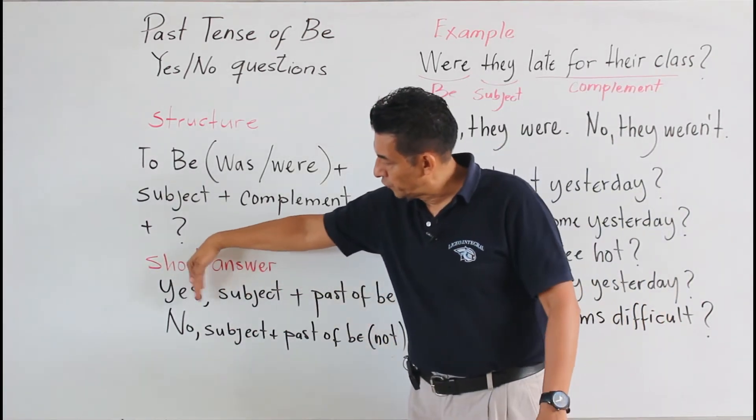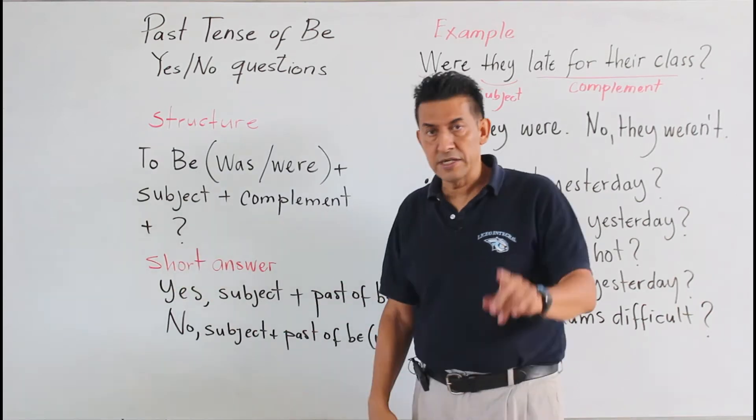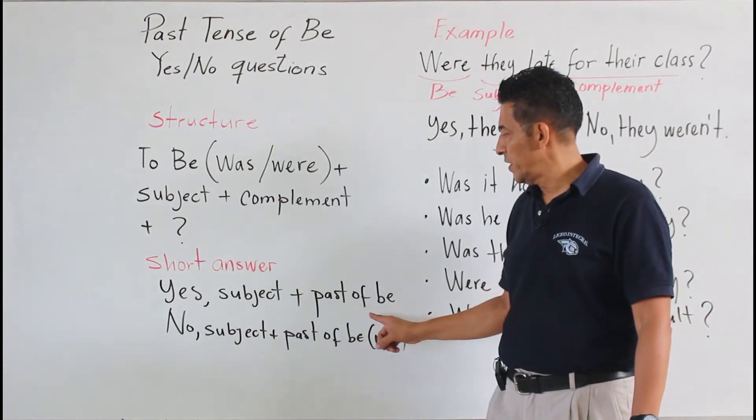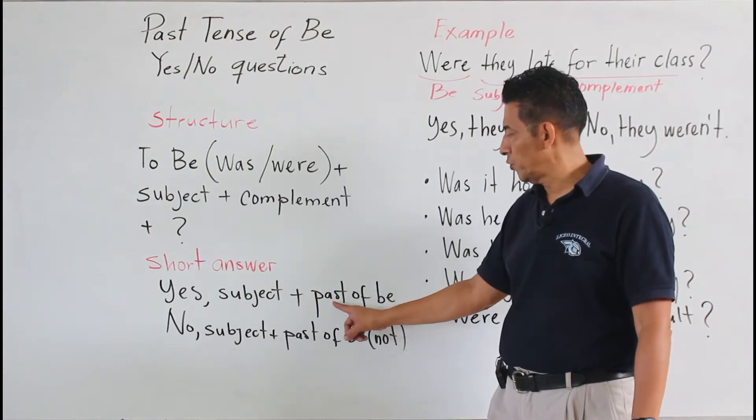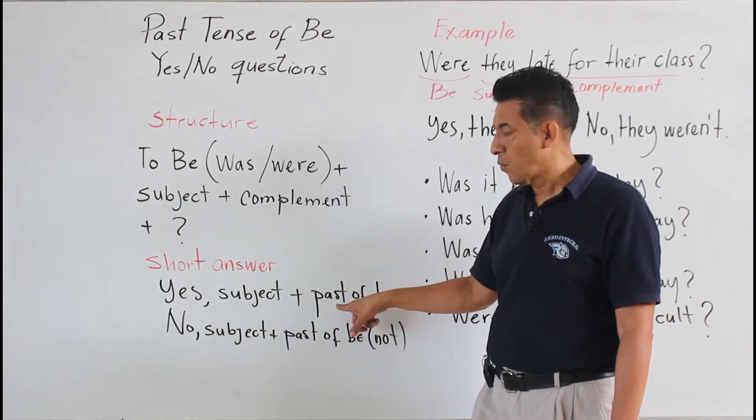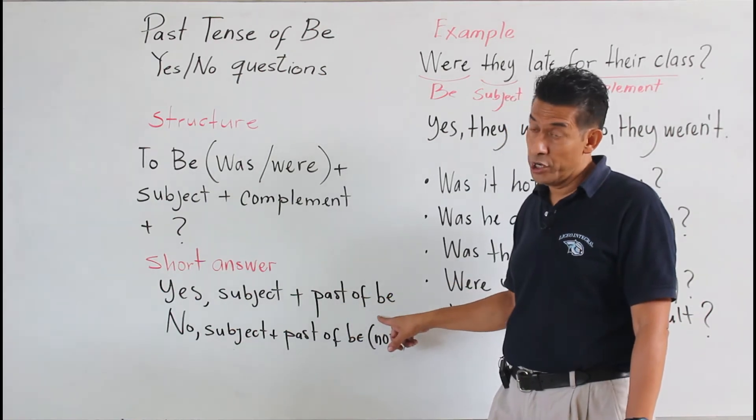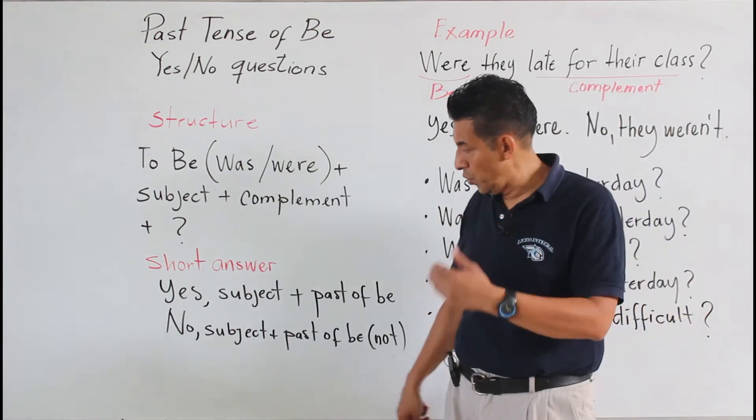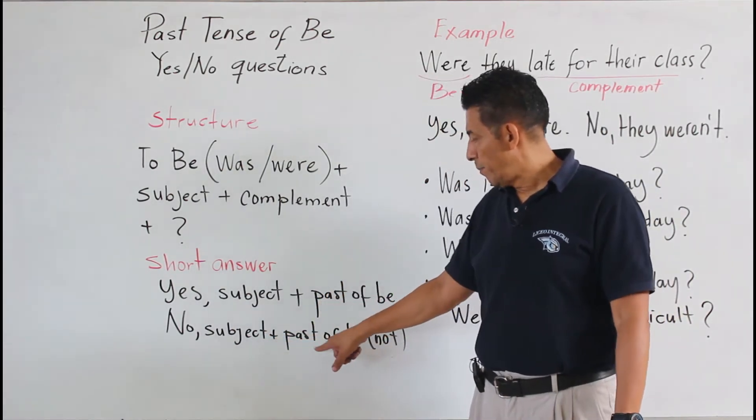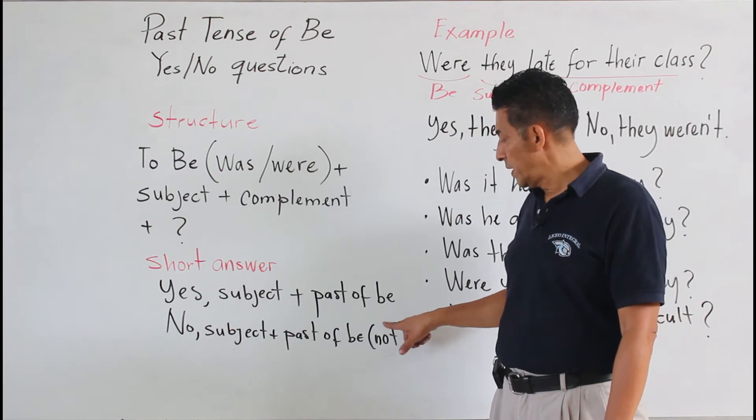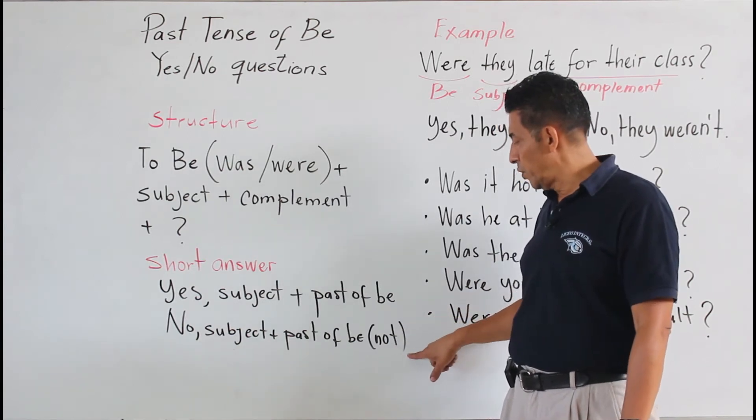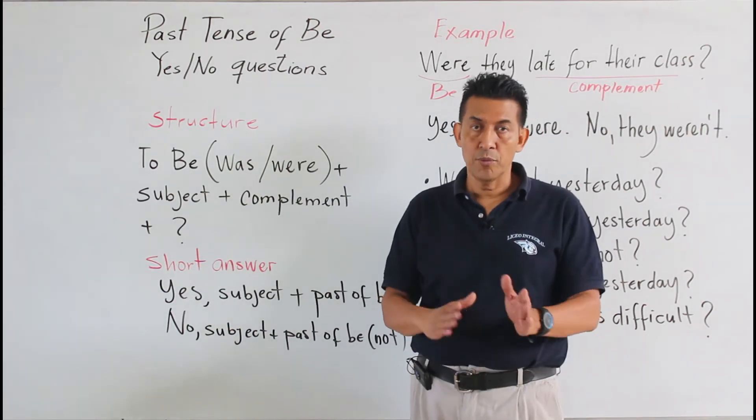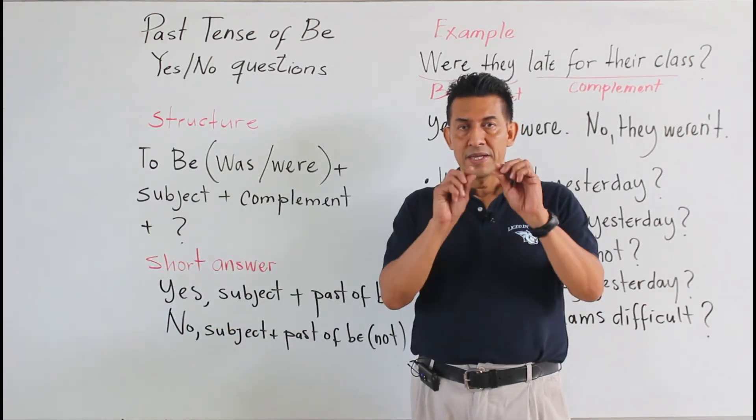Entonces necesitamos responder yes si es afirmativa, y va a ir de acuerdo al sujeto más el pasado del verbo. Le he puesto past be porque puede ser was o puede ser were. Acá luego en la forma negativa utilizamos no. Se advierte el sujeto en past be y hemos agregado el negativo not. ¿Por qué? Porque puede ser wasn't o puede ser weren't.